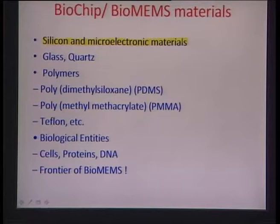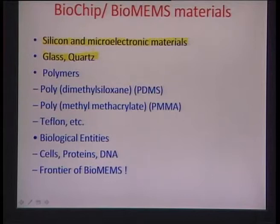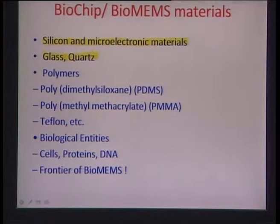Another important material used is glass and quartz. Because we are talking about transduction processes — sometimes chemical to optical signal transduction — a transparent medium like glass or quartz is very much required for covering these devices. Therefore, glass and quartz form an important material for fabrication of biochips.